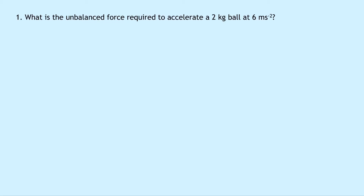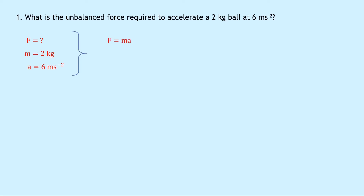Question one says: what is the unbalanced force required to accelerate a two kilogram ball at six meters per second squared? We write down what we know — we're trying to find the unbalanced force, the mass is two kilograms, and the acceleration is six meters per second squared. Using Newton's second law, F equals MA, and substituting in our numbers: two times six equals 12 Newtons.